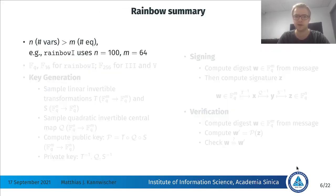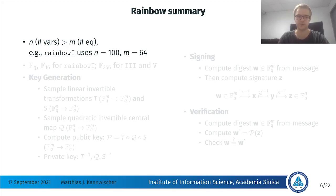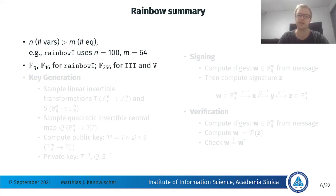Let's dive a little bit more into the details of Rainbow. We first need to pick parameters n and m, where n is the number of variables and m is the number of equations. For MQ signatures, n is always larger than m. For example, Rainbow 1 uses n equals 100 and m equals 64 — 100 variables and 64 equations in total. Then we pick a finite field: F16 for Rainbow 1, and F256 for Rainbow 3 and Rainbow 5. So for this talk, only F16 is relevant.